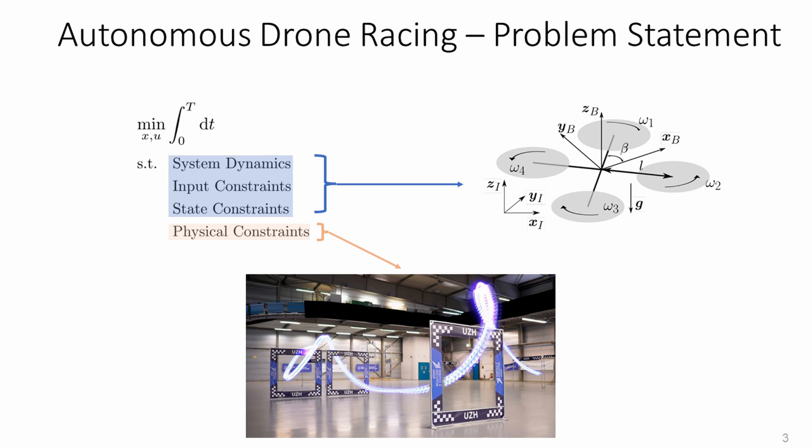Let's jump directly to the definition of the drone racing problem. We define the drone racing task as an optimization problem where the time is minimized. This optimization is subject to the system dynamics and constraints and to the constraints of the track, passing through a series of gates in a certain order. Now, the question is, how do we solve this problem?